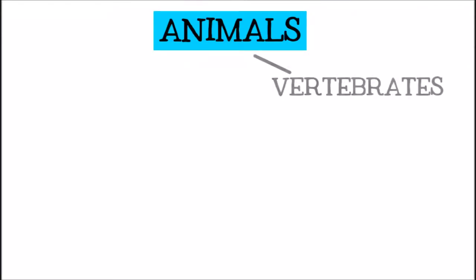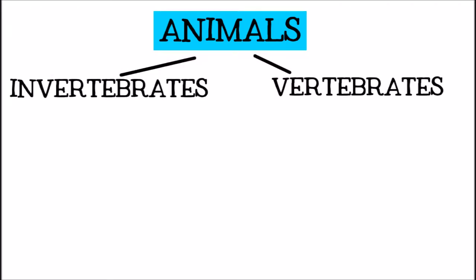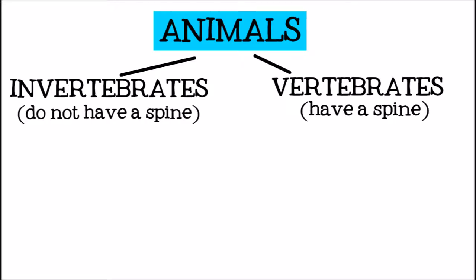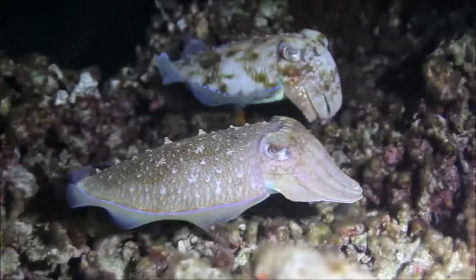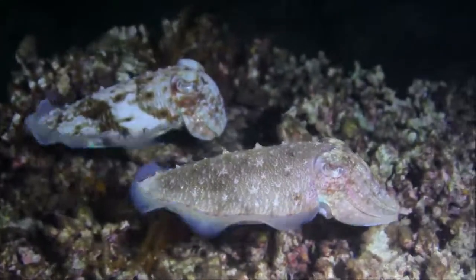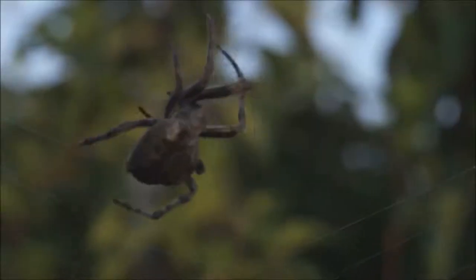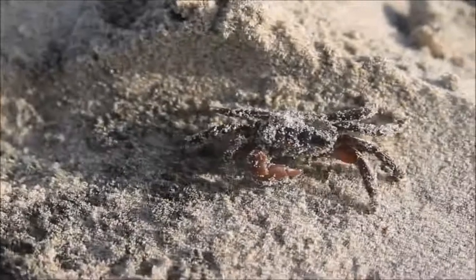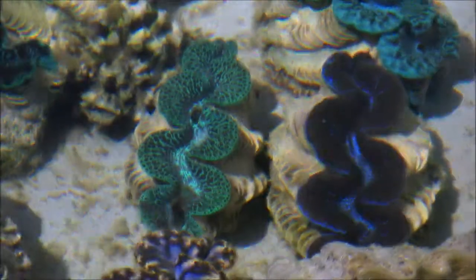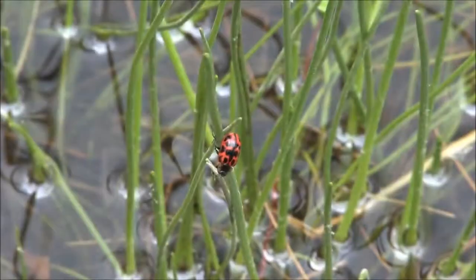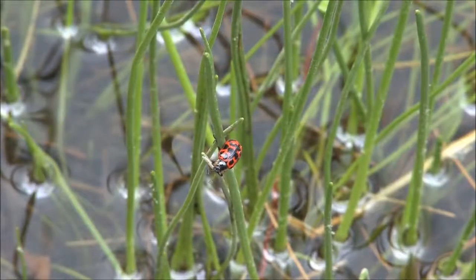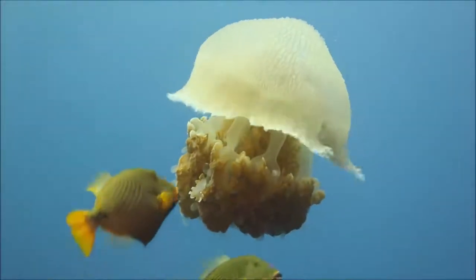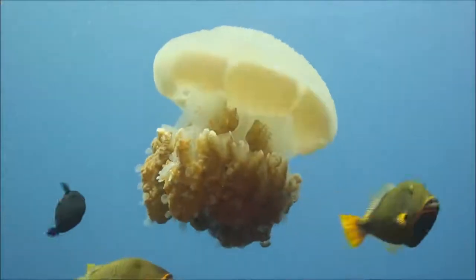The two largest groups of animals are vertebrates and invertebrates. Vertebrates are animals that have spines, or backbones. Invertebrates are animals that do not have backbones. Most of the animals in the world are invertebrates. Some examples of invertebrates are octopus and squid, insects, arachnids, starfish and sea urchins, jellyfish, crabs and lobsters, clams, and many more creatures. On land, most invertebrates are fairly small, but in the water they may grow to much larger sizes, as the water will support them even without a skeleton.